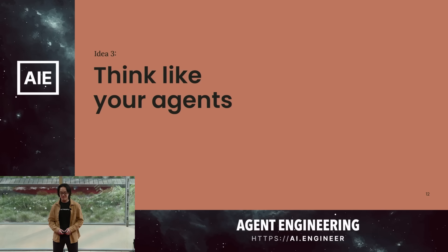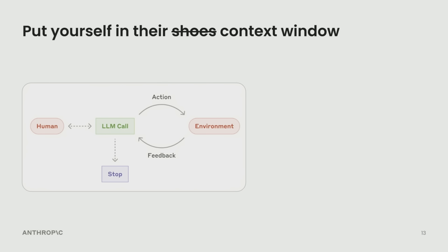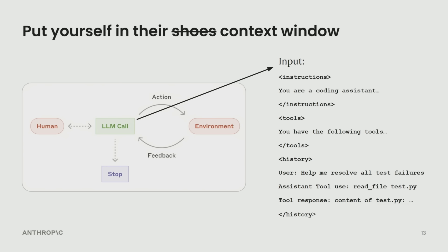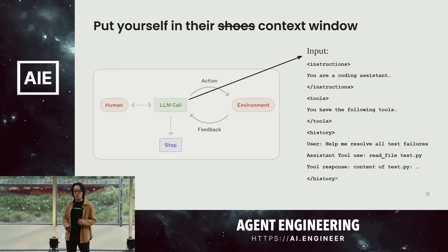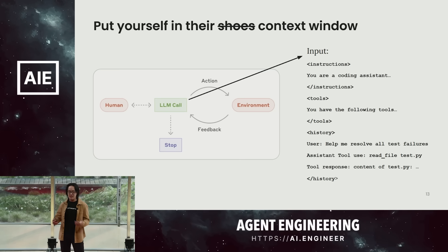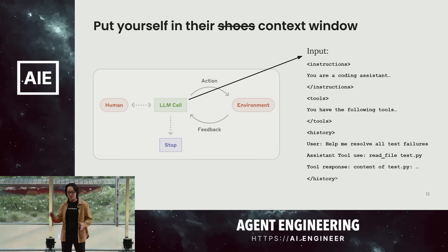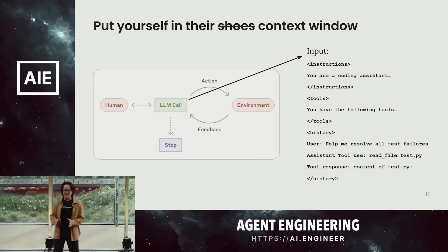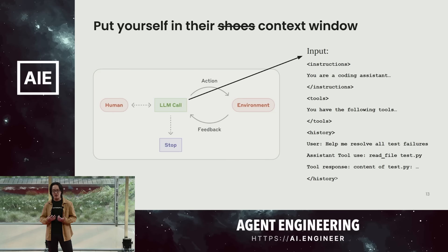This is the last idea: think like your agents. I've seen a lot of builders — myself included — who develop agents from our own perspectives and get confused when agents make a mistake. It seems counter-intuitive to us. That's why we always recommend to put yourself in the agent's context window. Agents can exhibit some really sophisticated behavior, it can look incredibly complex. But at each step, what the model is doing is still just running inference on a very limited set of context. Everything that the model knows about the current state of the world is going to be in that 10 to 20k tokens. It's really helpful to limit ourselves to that context and see if it's actually sufficient and coherent.